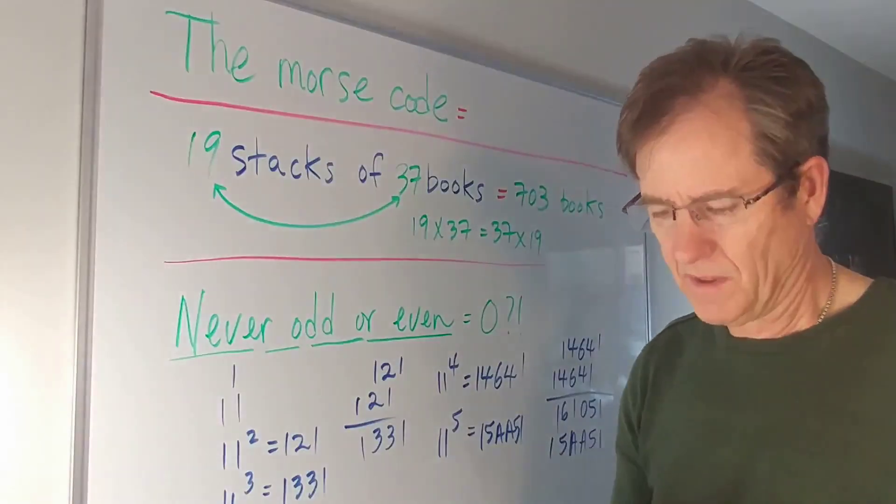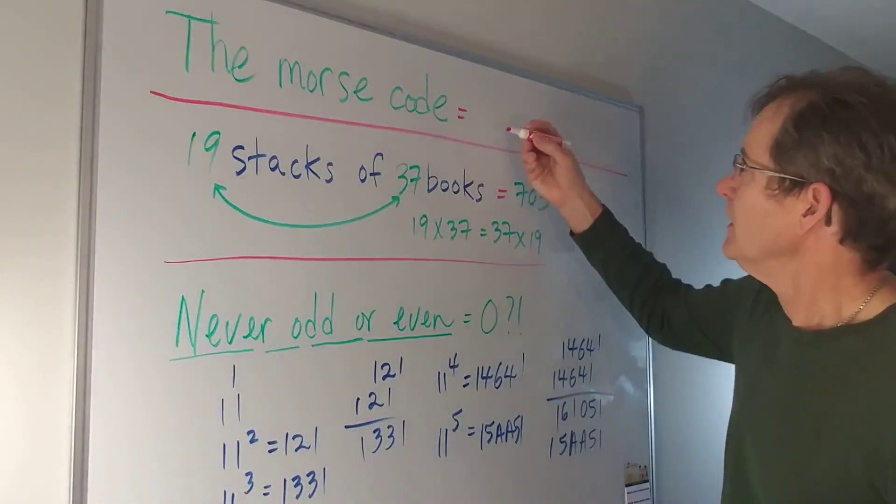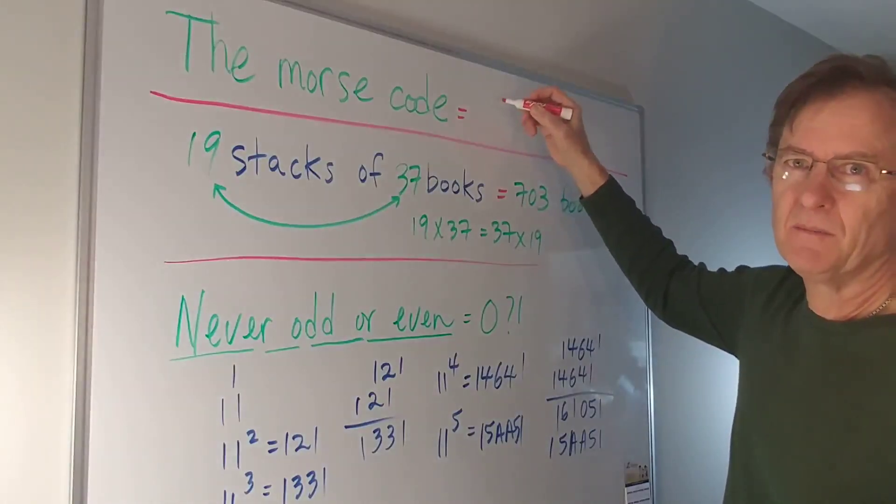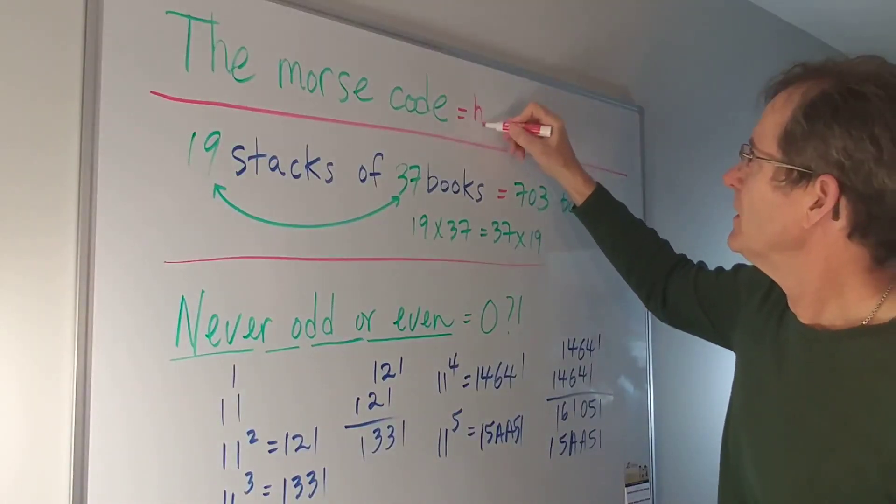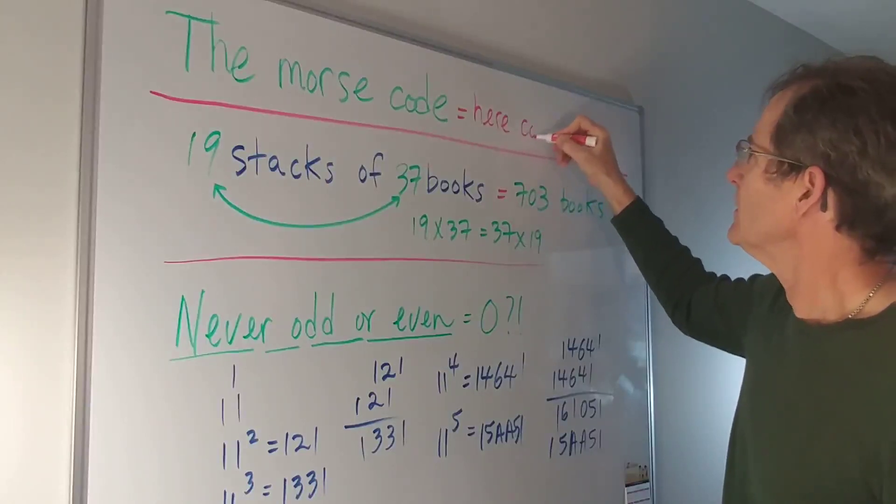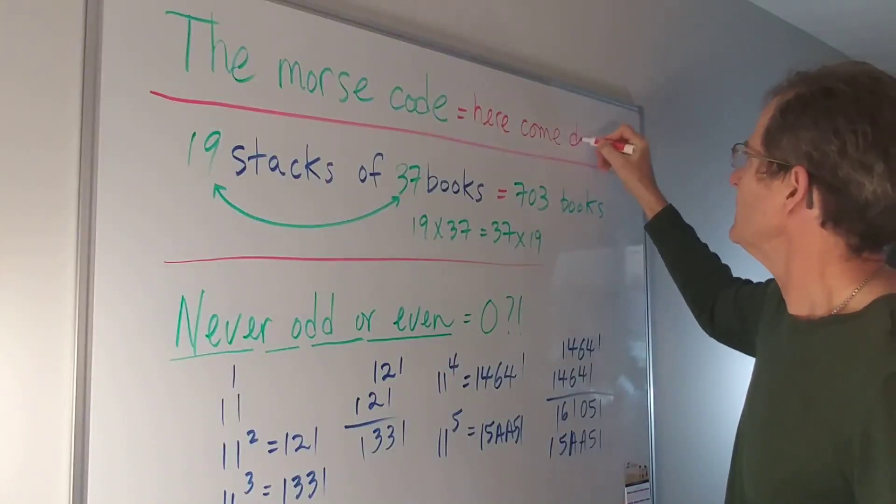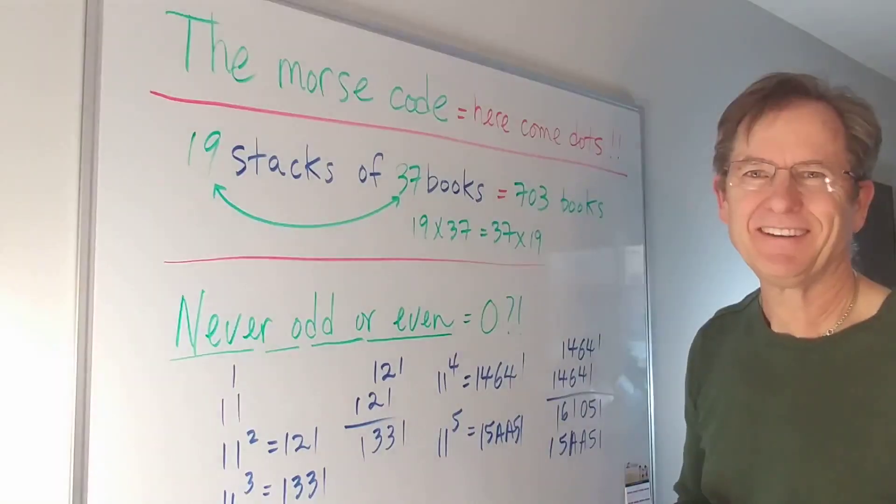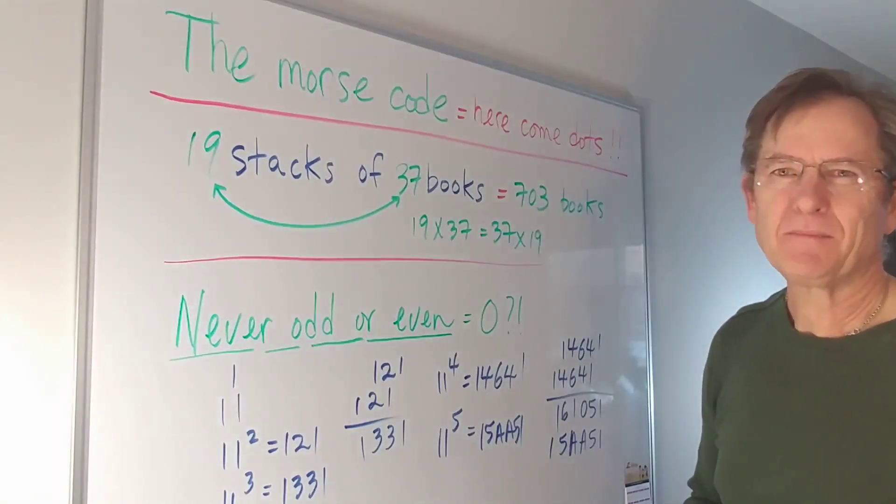Now back to our original question, the Morse code. Giving it some thought—you can always pause it and do that—but otherwise you get 'here come dots'. Isn't that cute? See if you can come up with some other palindromes.